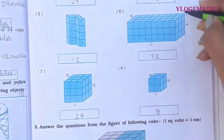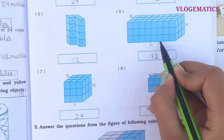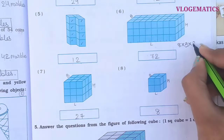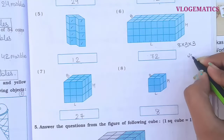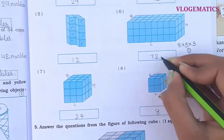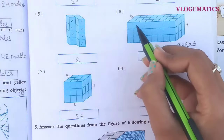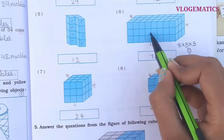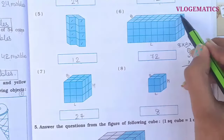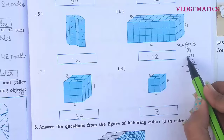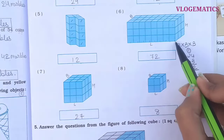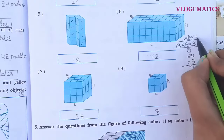For shape 6, using the formula: length × breadth × height. Length is 8 cm, breadth is 3 cm, height is 3 cm. So 8 × 3 = 24, and 24 × 3 = 72. You can also count each cube individually — counting all layers of 24 gives 24 × 3 = 72. Both methods give the same answer: 72 cm cubes. Length multiplied by breadth multiplied by height gives the same result.